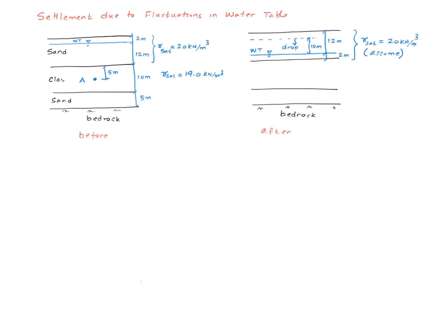The final topic that I want to discuss here is the settlement due to fluctuations in the groundwater table. Suppose we have a soil profile that looks like that. There is a layer of clay sandwiched between two sand layers. Water table is right here, two meters below the ground level.